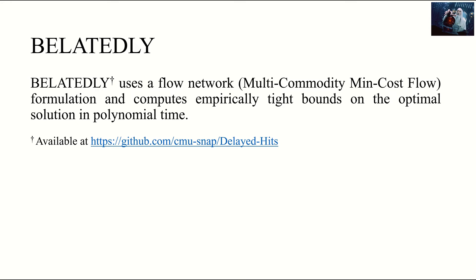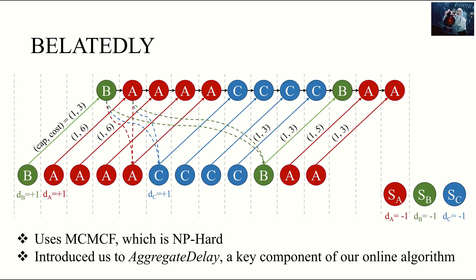We find the answer to the latency minimization problem in the form of a flow network formulation. Our offline algorithm, Belatedly, computes empirically tight bounds on the optimal latency in polynomial time. Unfortunately, I don't have time to explain the flow formulation in any kind of detail. But there's two points about it that are worth noting. First, it's based on an MCMCF problem, the integer version of which is known to be NP-hard. And second, the formulation introduced us to the notion of aggregate delay, which helped us design our practical caching algorithm. I'll discuss this metric in a few slides.